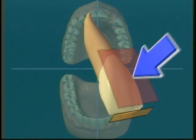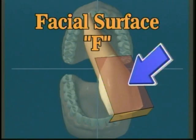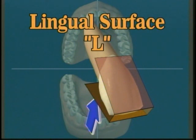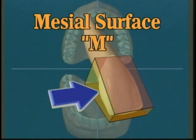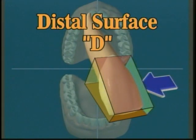The large flat surface facing out toward your face or lips is referred to as facial, sometimes referred to as labial, abbreviated F. The large flat surface directly opposite the labial on the tongue side is referred to as lingual, abbreviated L. The surface nearest the midline or middle of your body is called the mesial, abbreviated M. The surface farthest from the middle of the body is referred to as distal, abbreviated D.